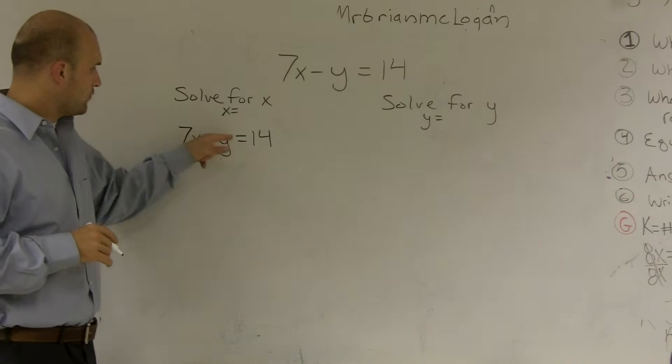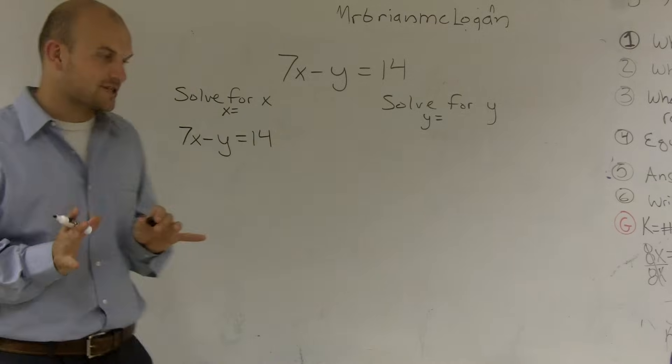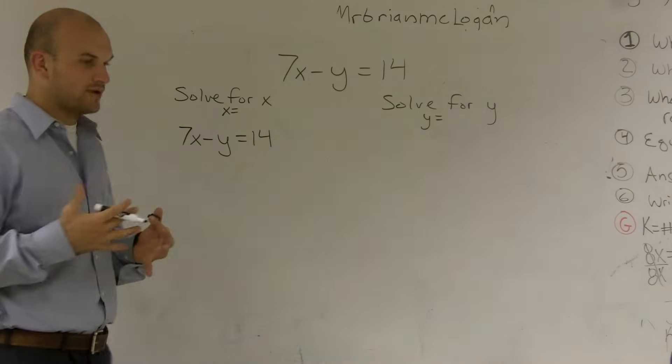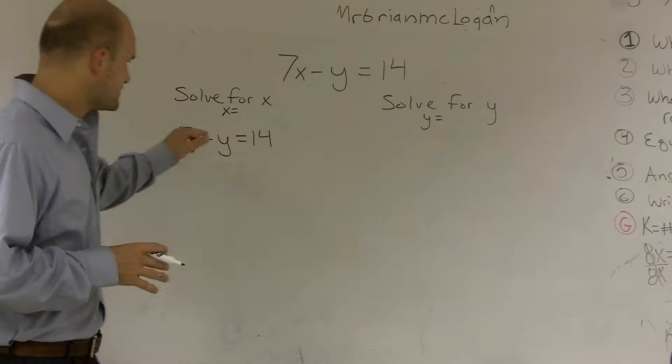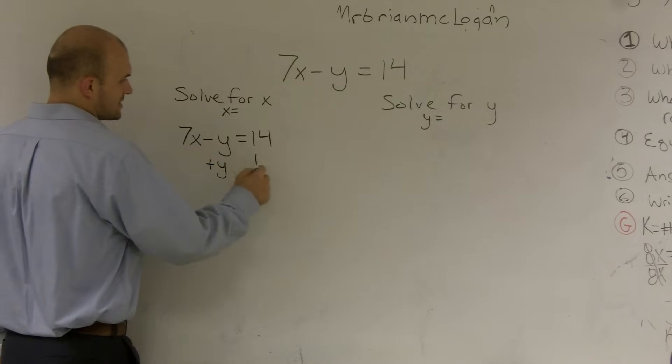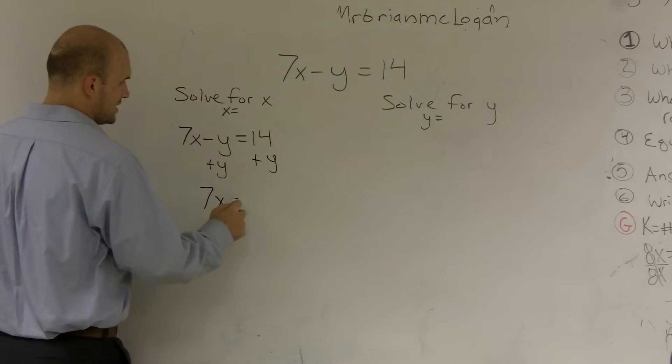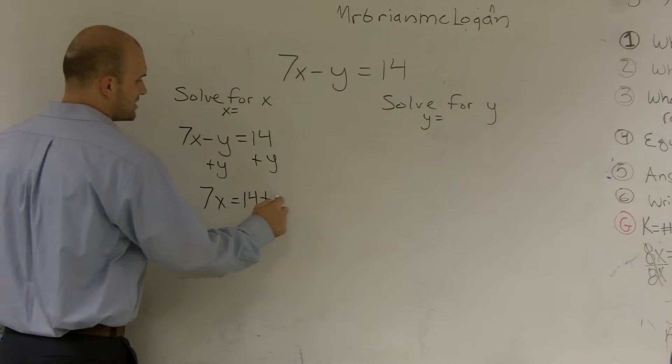So I'm subtracting a y from my x. And we always want to undo our addition and subtraction when we're undoing operations. So first thing I'm going to do is I'm going to undo 7x minus y. That means I'm going to add a y to both sides. Therefore, now I get 7x equals 14 plus y.